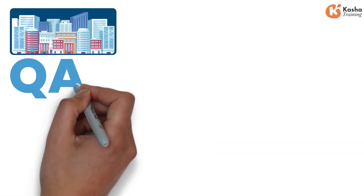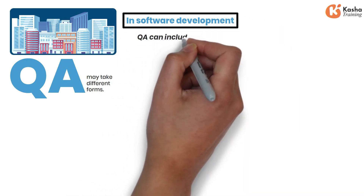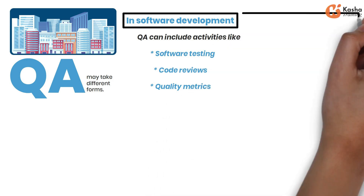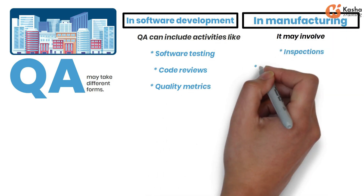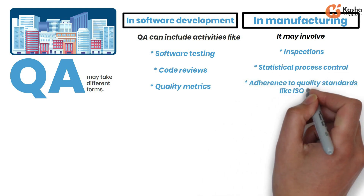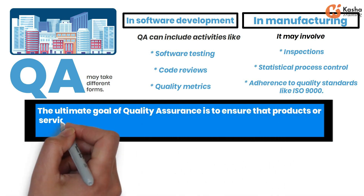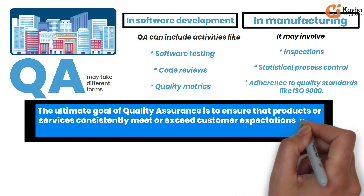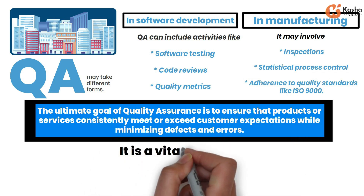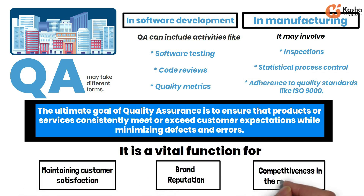In different industries, QA may take different forms. For instance, in software development, QA can include activities like software testing, code reviews, and quality metrics, while in manufacturing, it may involve inspections, statistical process control, and adherence to quality standards like ISO 9000. The ultimate goal of quality assurance is to ensure that products or services consistently meet or exceed customer expectations while minimizing defects and errors. It is a vital function for maintaining customer satisfaction, brand reputation, and competitiveness in the marketplace.